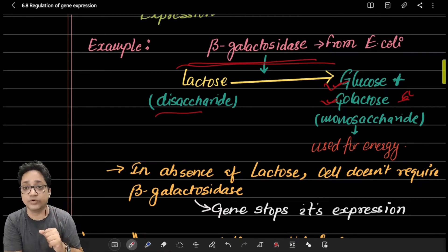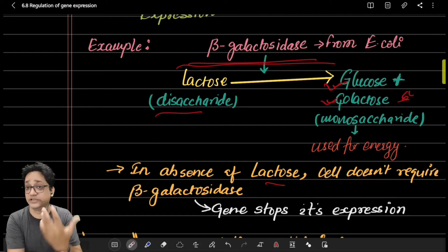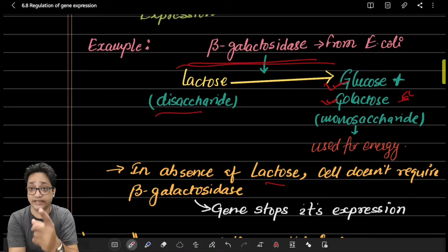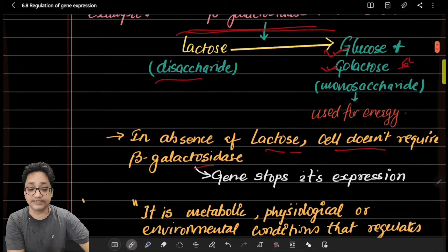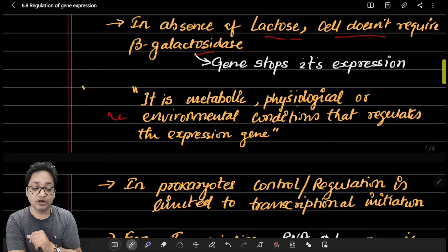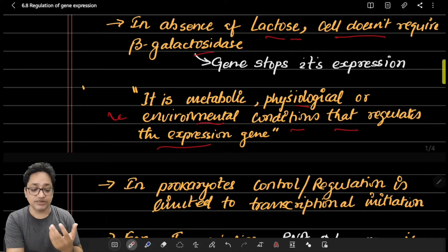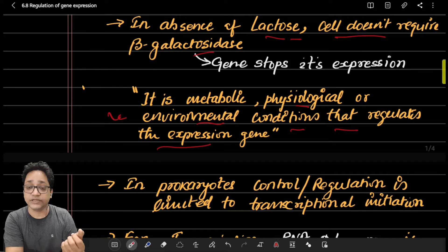Beta-galactosidase is required by bacterial cells to break disaccharides into monosaccharides. When lactose is available, it is expressed through gene expression. But when lactose is not available, these enzymes are useless. Gene expression also requires energy, so in the absence of lactose, synthesizing beta-galactosidase would waste cellular energy. Therefore, in the absence of lactose, the cell does not require beta-galactosidase and the gene stops its expression.